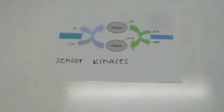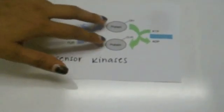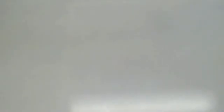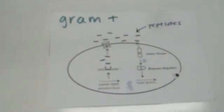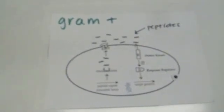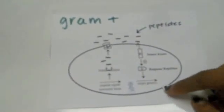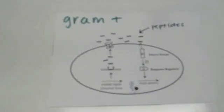Detection of auto-inducers is controlled by two-component adaptive response proteins known as sensor kinases. The interaction of peptides with the sensor kinases causes a series of phosphorylation which results in the phosphorylation of a response regulator protein. This activates the regulator, allowing it to bind to DNA and alter transcription.